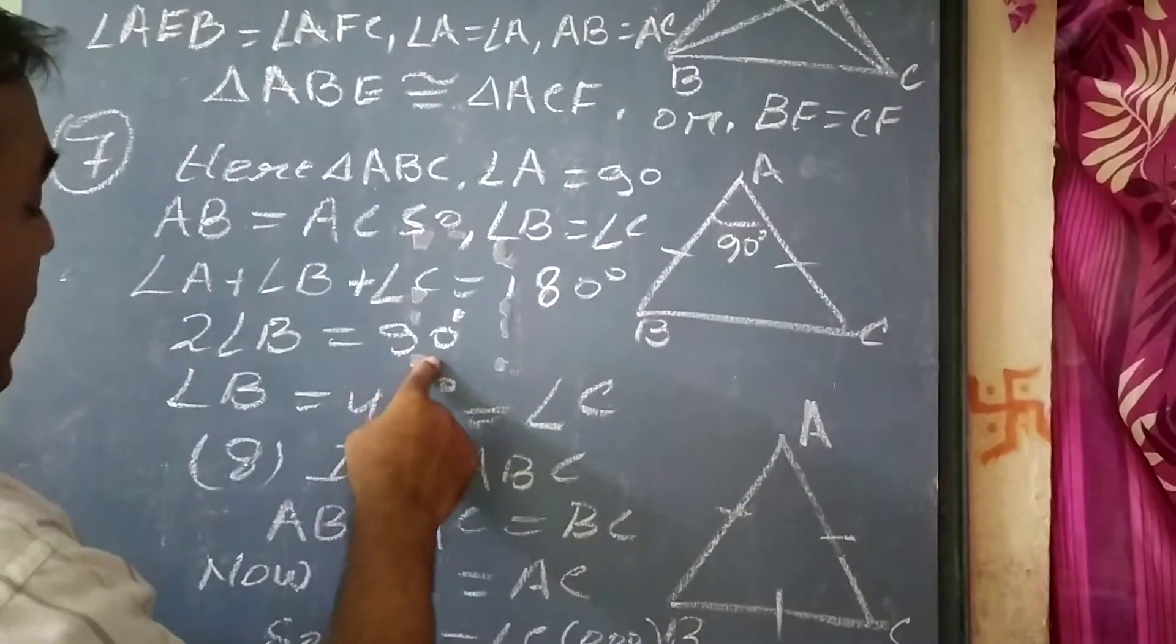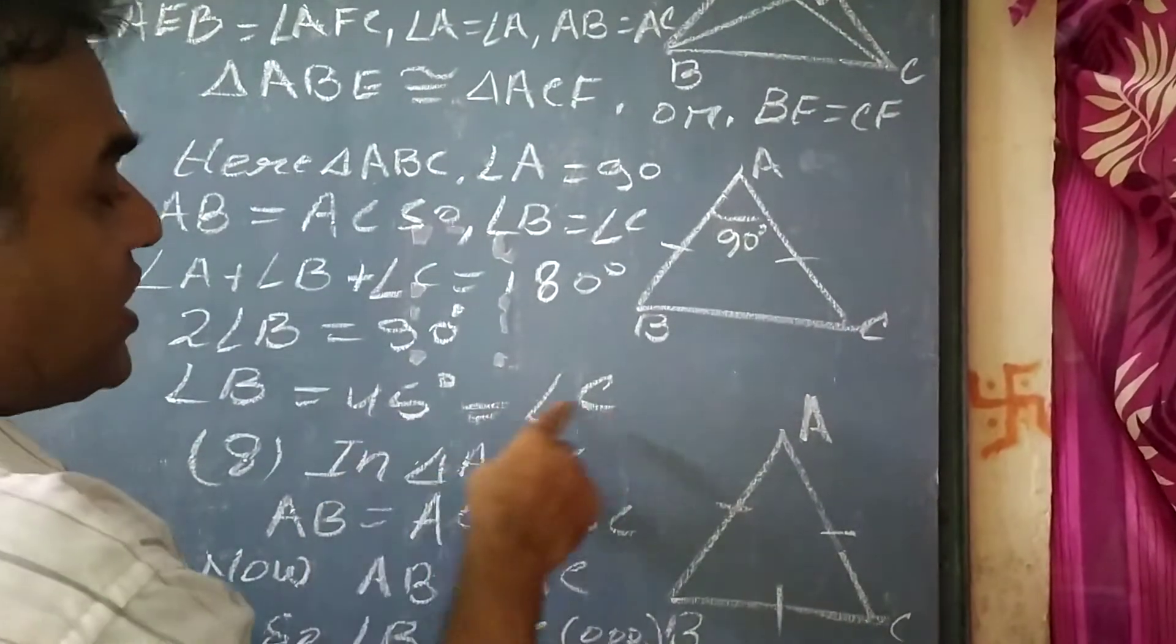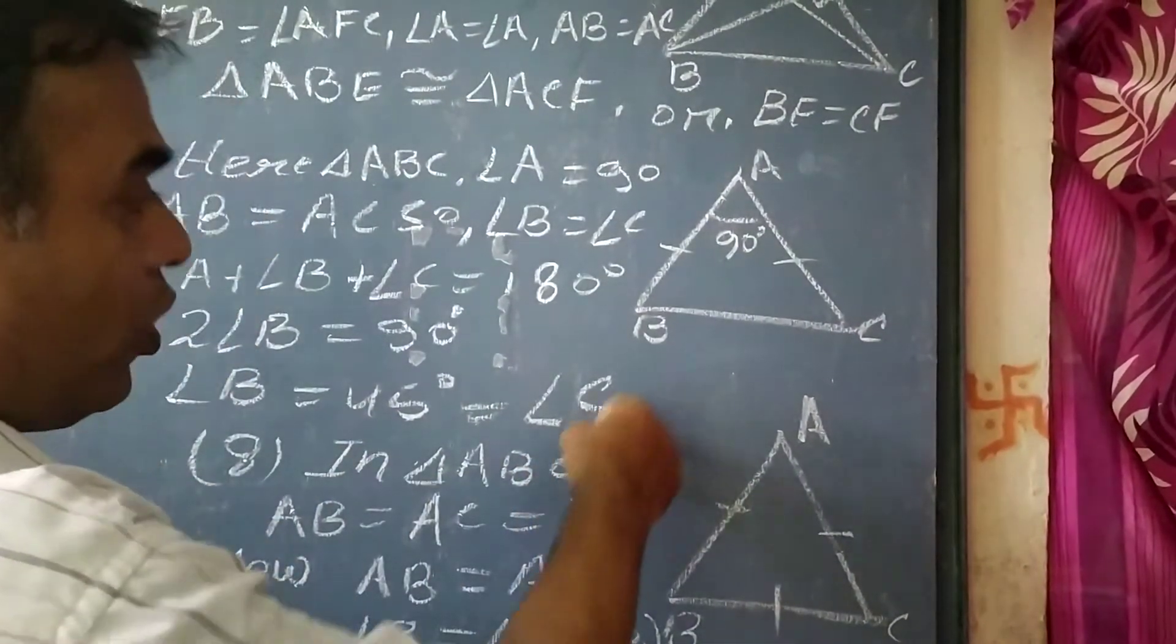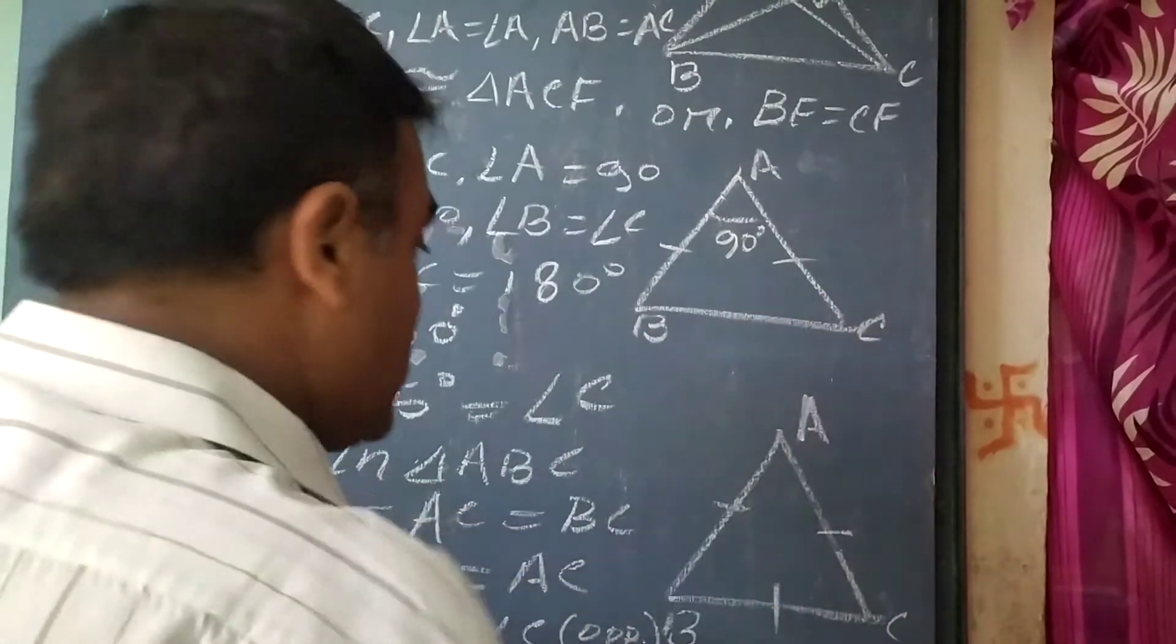So 2 angle B equal to 90 degrees, and angle B equal to 45 degrees. That is angle C equal to 45 degrees. So angle B equal to 45, angle C equal to 45.